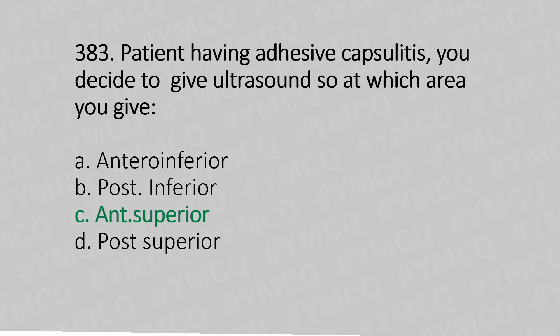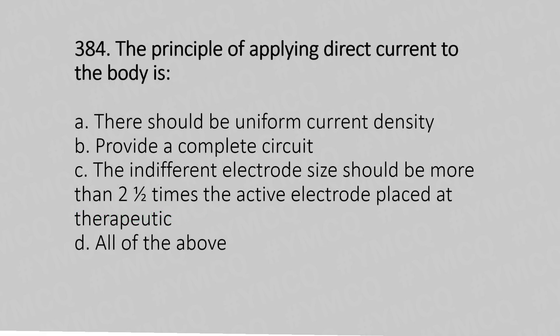Question 384: The principles of applying direct current to the body include: Option A: there should be uniform current density. Option B: provide a complete circuit. Option C: the indifferent electrode size should be more than two and a half times the active electrode placed at the therapeutic site. Option D: all of the above. The answer is Option D: all of the above.